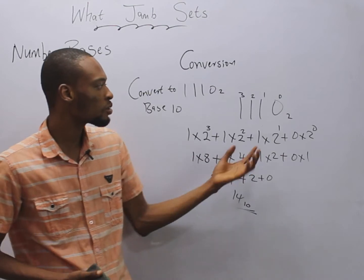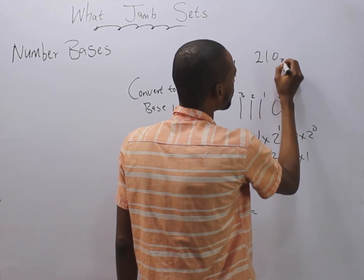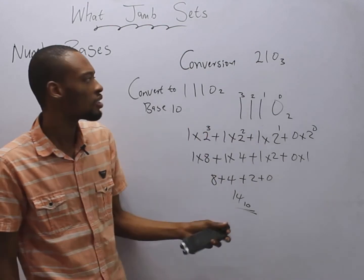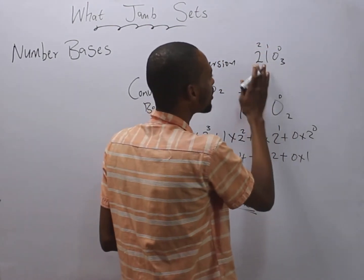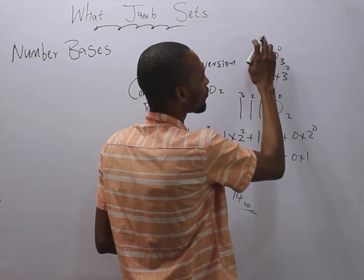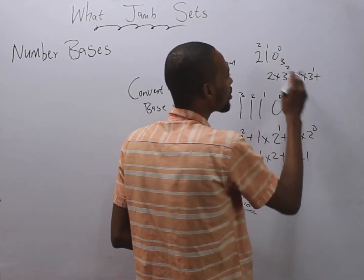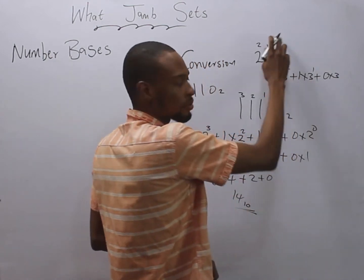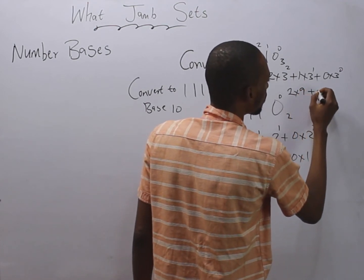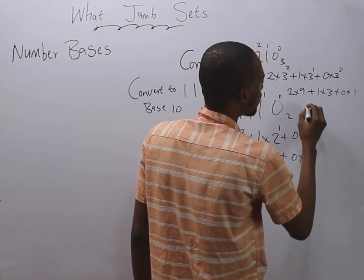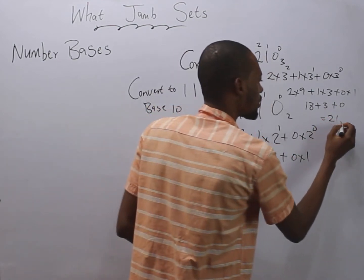No matter how many values you are given, this is how you convert. For example, if I give you two one zero in base three — notice the values don't go beyond two — and ask you to convert to base ten, you say: two times three raised to the power of two, plus one times three raised to the power of one, plus zero times three raised to the power of zero. This gives two times nine, which is eighteen, plus three, plus zero — equals twenty-one in base ten.